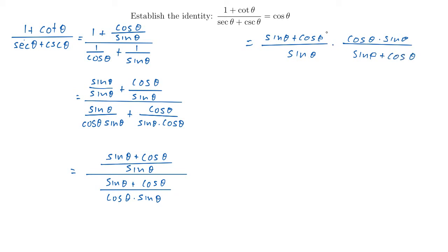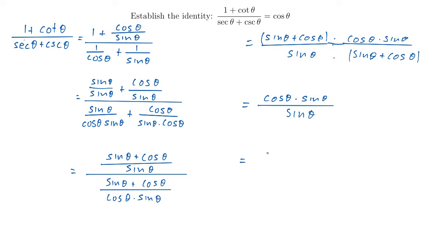Now when you multiply these two fractions, you just multiply straight across, keeping everything in parentheses. We have sine theta plus cosine theta on the bottom and the same thing on top, so those will cancel out. What we're left with is cosine theta times sine theta on top, and in the denominator just that sine theta. Sine theta over sine theta is 1, so that leaves us just with cosine theta — as we were hoping to find. That's the other side, so we get to put a check mark.